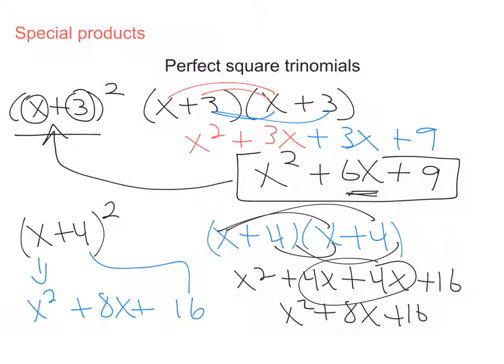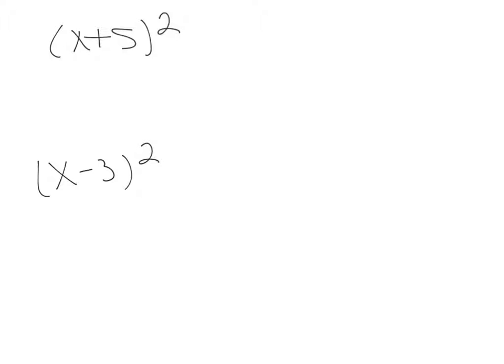Let's try another. Let's take a look at two more examples. x plus 5 quantity squared. You can always write it out, but let's see if we remember the shortcut. Square the first term, square the second term, and then go ahead and double the 5 to get 10x.